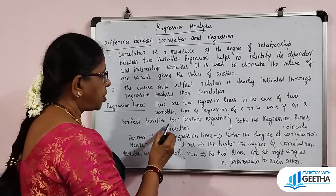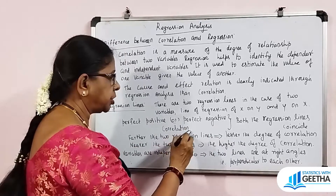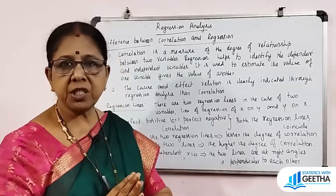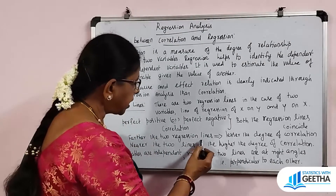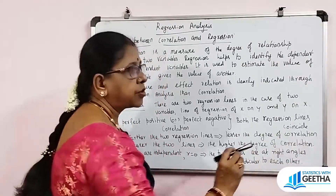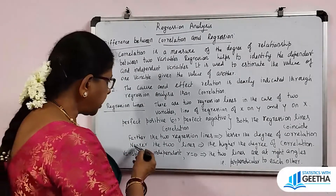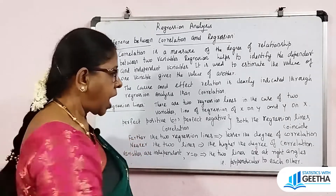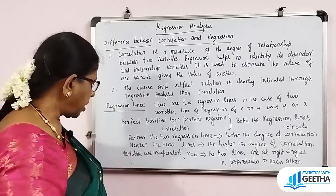If there is perfect positive or perfect negative correlation, if you see the regression lines on a graph, they will coincide — there is only one line. When a lesser degree of correlation exists between the variables, the two regression lines are nearer to each other. The nearer the two lines, the higher the degree of correlation between the two variables.